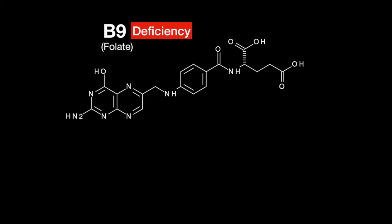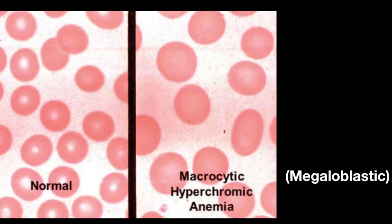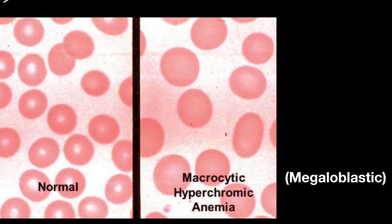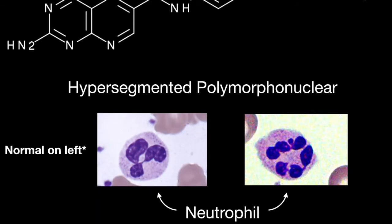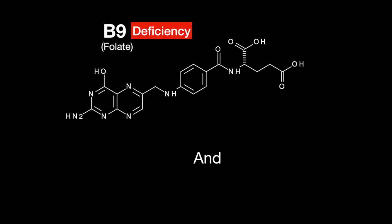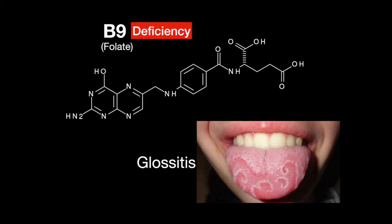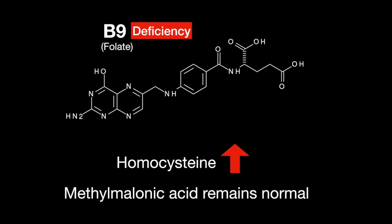A deficiency of folate results in macrocytic or megaloblastic anemia, when red blood cells are larger than usual and contain less hemoglobin. Hypersegmented polymorphonuclear cells can also occur, where neutrophil nuclei have six or more lobes, along with glossitis. An increase in homocysteine levels can be seen, but with normal methylmalonic acid levels.